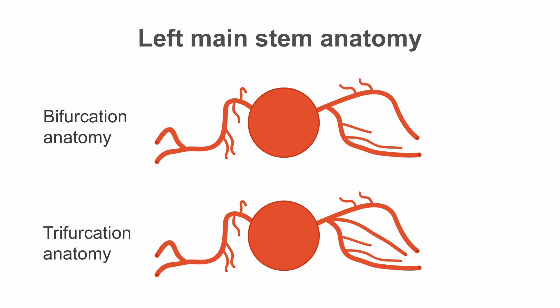The left main stem itself may adopt two main configurations. In left main stem bifurcation anatomy, the left main stem separates into the left anterior descending artery and also the left circumflex artery. In left main stem trifurcation anatomy,